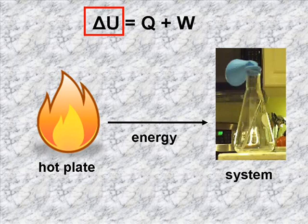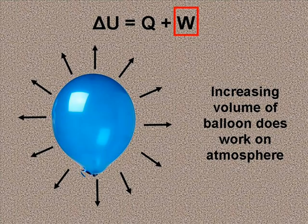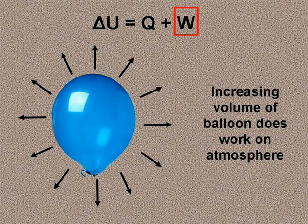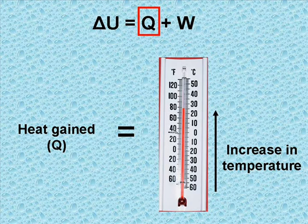The increase in internal energy from the energy transferred from the hot plate resulted in both work done by the system and an increase in heat. This shows that there is a direct relation between internal energy, work, and heat.